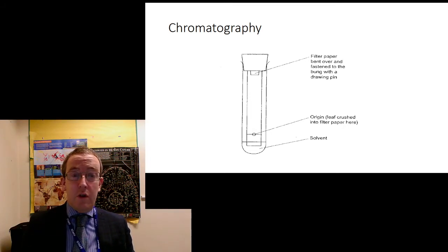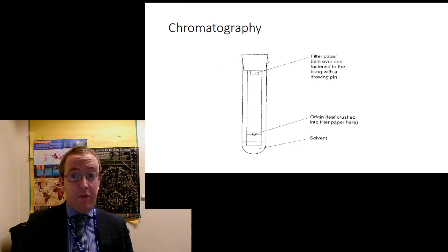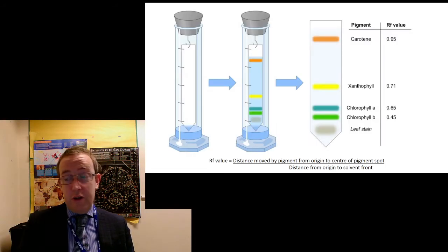Fancier versions will use a glass plate with silica powder on it. That's called thin layer chromatography. That's basically a fancier version. You get better separation. And the solvents can vary from experiment to experiment. You'll get different results depending on which pigments you use or which solvents you use.